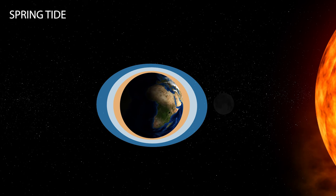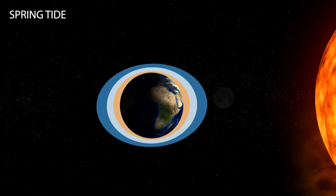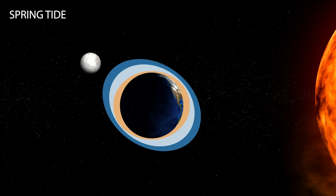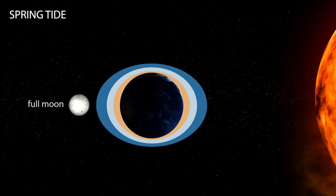A spring tide, also called a king tide, occurs during new moon and full moon phases whereby the gravitational pull of the moon and the sun are aligned. This results in extreme high and low tides.